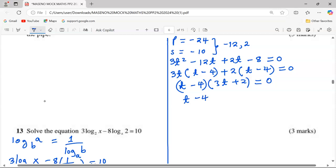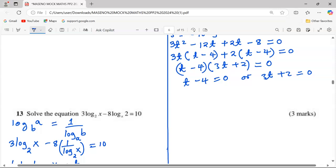t - 4 can be 0 or 3t + 2 can also be 0. At this point, we can now say the value of t is either 4 or the value of t is -2/3.